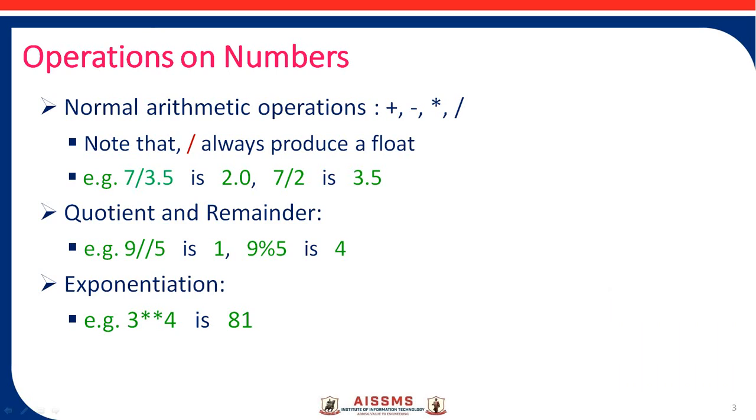Then there is another operator used for operations on numbers called exponentiation. Exponentiation is calculating the power of particular numbers. In this case, 3 to the power of 4 (3**4) gives the result 81.